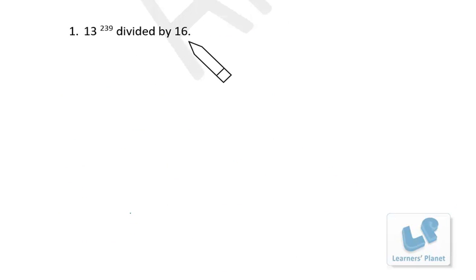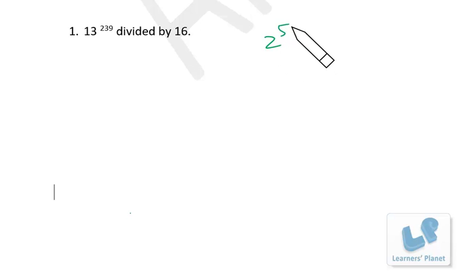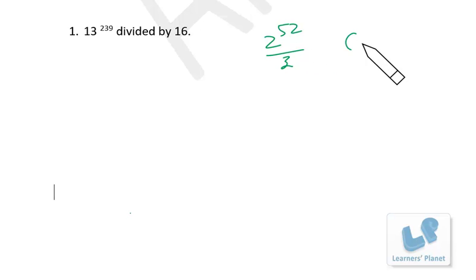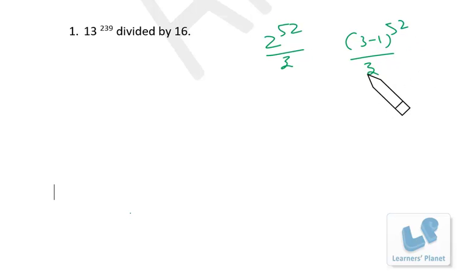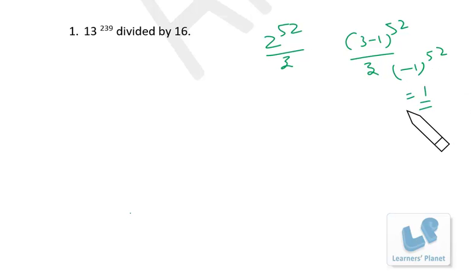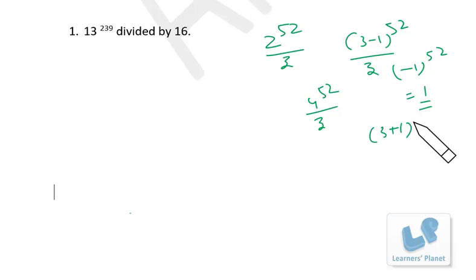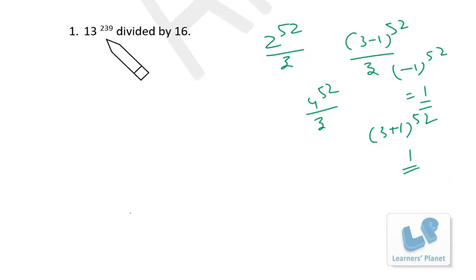The first question: 13^239 divided by 16 — what is the remainder? For a simpler example like 2^52 divided by 3: the difference between 2 and 3 is just 1, so 2 = (3−1). Then (3−1)^52 divided by 3 gives remainder (−1)^52 = 1. Similarly, 4^52 divided by 3: write it as (3+1)^52, so remainder is 1^52 = 1. The first problem is a bit harder but still manageable.